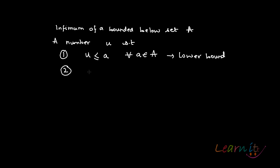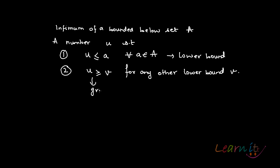The second property is that u should be greater than or equal to v for any other lower bound v. So u needs to be greater than or equal to any other lower bound. These two conditions together say that u is the greatest lower bound of the set.